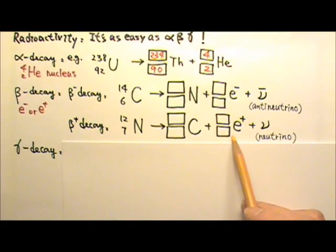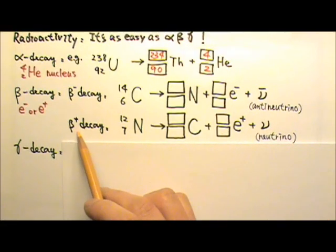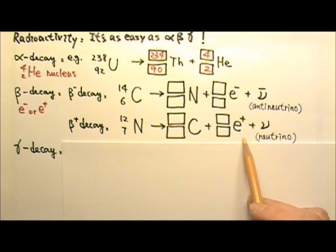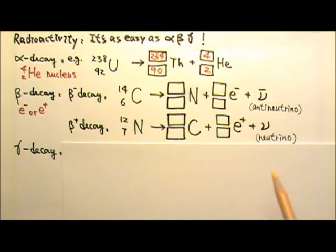If the decay gives off a positron, it is called a positive beta decay. When positive beta decay happens, a neutrino is also produced. Neutrino means a little neutral one.